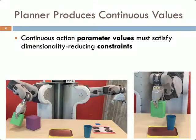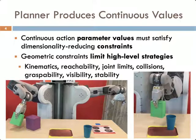The challenge in task and motion planning is that the planner must choose the values of continuous parameters for different actions, and these parameters must also satisfy various constraints. For example, in the previous video, there are kinematic constraints that the robot is actually grasping each object it's manipulating, as well as collision constraints to ensure that the object placements of the block and cup do not collide, nor does the robot collide with the table.